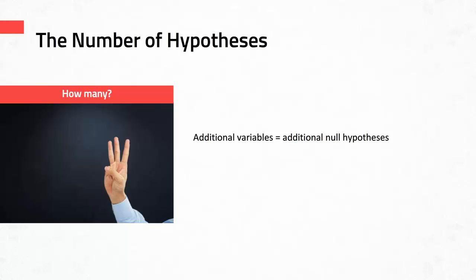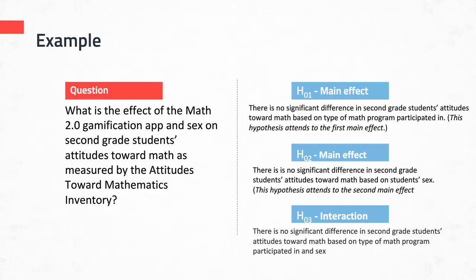Now let's take this example and add additional variables so you can see that the addition of variables results in the need for additional hypotheses. Let's add an additional independent variable: What is the effect of the Math 2.0 Gamification App and sex on second grade students' attitudes toward math as measured by the Attitude Toward Mathematics Assessment? We still have one dependent variable — attitudes toward math — but now there are two independent variables: type of math program and sex. This research question actually requires three null hypotheses.